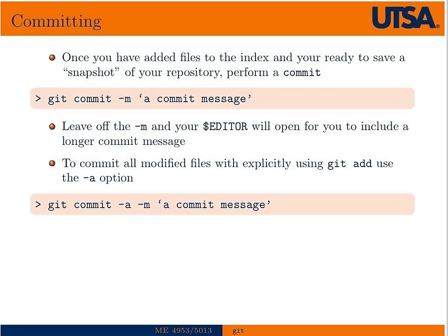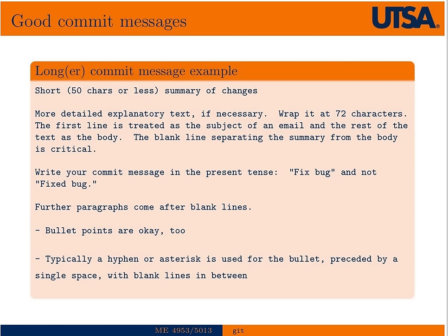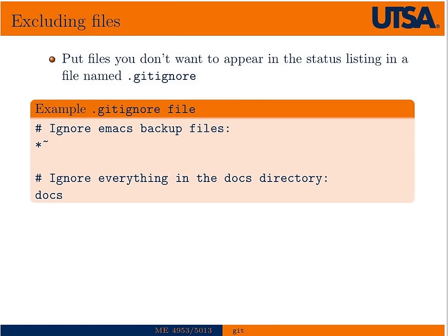A bit about commit messages: if you leave off the dash m, it opens an editor and you're prompted to write a message. The first line should always be very short and summarize the changes. If you need further explanation, put it below in bullets. There are also conventions around the tense of your text to be consistent with log messages. We can get rid of untracked files cluttering our git status by putting them in a gitignore file.